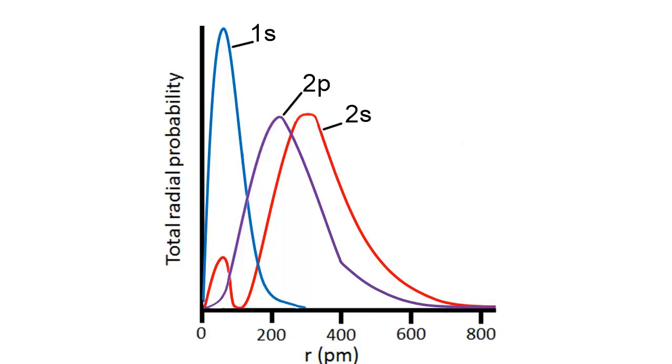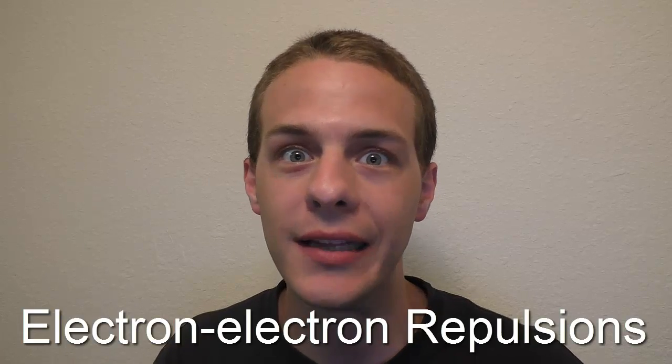We can better understand sublevel energy splitting by looking at the radial distribution functions for all orbitals within a given principal shell, which shows the probability of finding an electron within a thin spherical shell at a distance r from the nucleus. Looking at the 2s and 2p radial distribution functions, we can see that an electron in a 2p orbital generally has a higher probability of being found closer to the nucleus than an electron in a 2s orbital. However, the 2s orbital is actually lower in energy than the 2p orbital — but only when the 1s orbital is occupied. When the 1s orbital is empty, the 2s and 2p orbitals are degenerate.